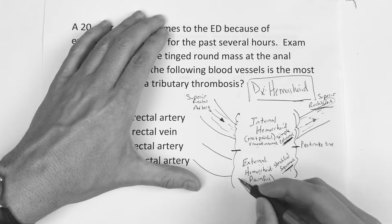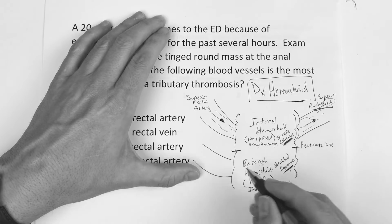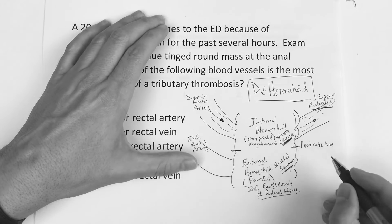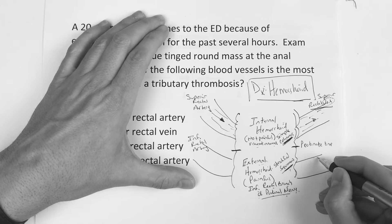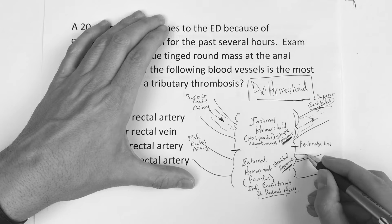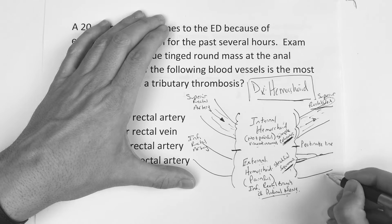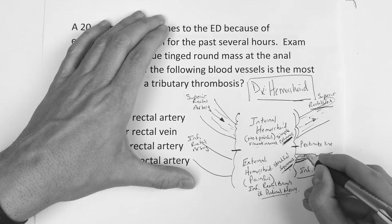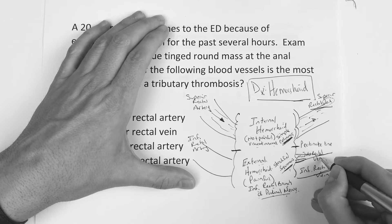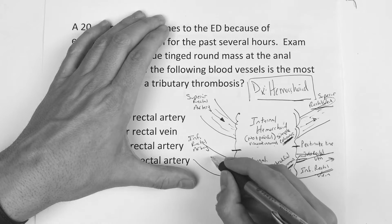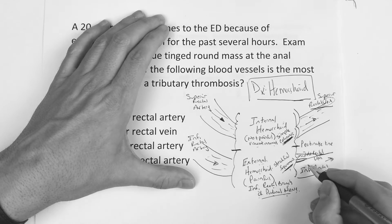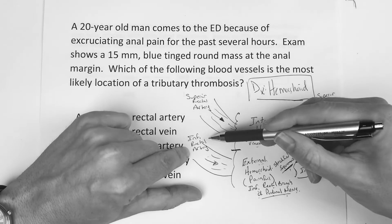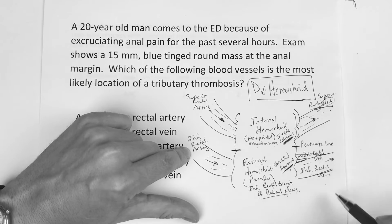On the bottom — for the external hemorrhoid, below the pectinate line — it's going to be the inferior rectal artery bringing blood in. And then going away, I've seen this two ways — Pathoma did it a slightly different way — but you have the inferior rectal vein and the middle rectal vein, either one. So blood comes in and goes out. You've got to know the names: up top, superior rectal artery and superior rectal vein; at the bottom, inferior rectal artery and inferior rectal vein or middle rectal vein. That's the anatomy for any type of hemorrhoid.